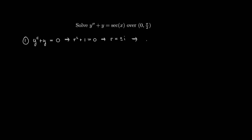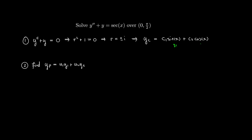We've already seen how to solve second-order linear ODEs with constant coefficients that are homogeneous. The two solutions are sine x and cos x, giving a general solution of C1*sin(x) plus C2*cos(x). So we've found the complementary function. Now variation of parameters will give us the particular solution yp, which is of the form u1*y1 plus u2*y2, where y1 is sin(x) and y2 is cos(x).